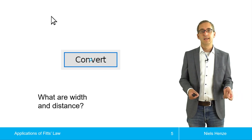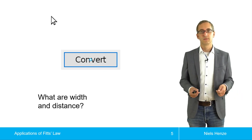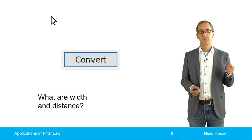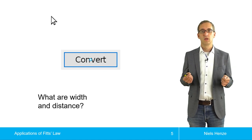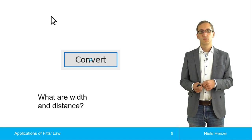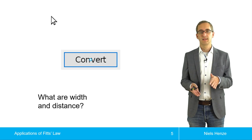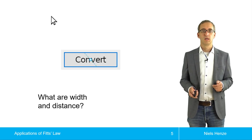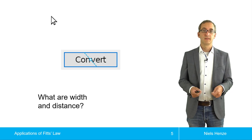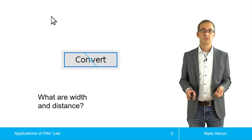But what's the size of the button — is it the same as before? It's not. What we have to do is draw a line from the pointer's position through the center of the target, and then figure out what portion of the button this line crosses.